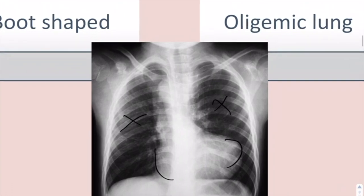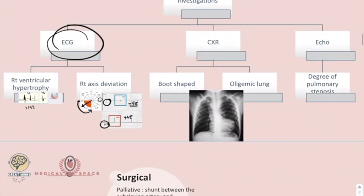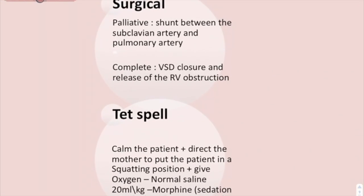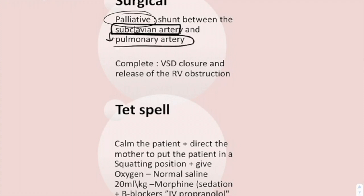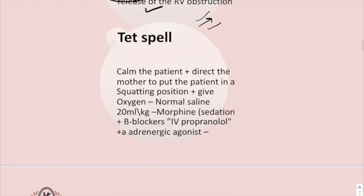On chest X-ray you will see the boot shape and an oligemic lung. On echo, you will see the degree of pulmonary stenosis or the degree of right ventricular outflow obstruction. The treatment is surgical — a palliative surgery serves as a bridge to definitive surgery, typically a shunt between the subclavian artery and the pulmonary arch. The complete surgery involves ventricular septal defect closure and release of the right ventricular outflow obstruction.